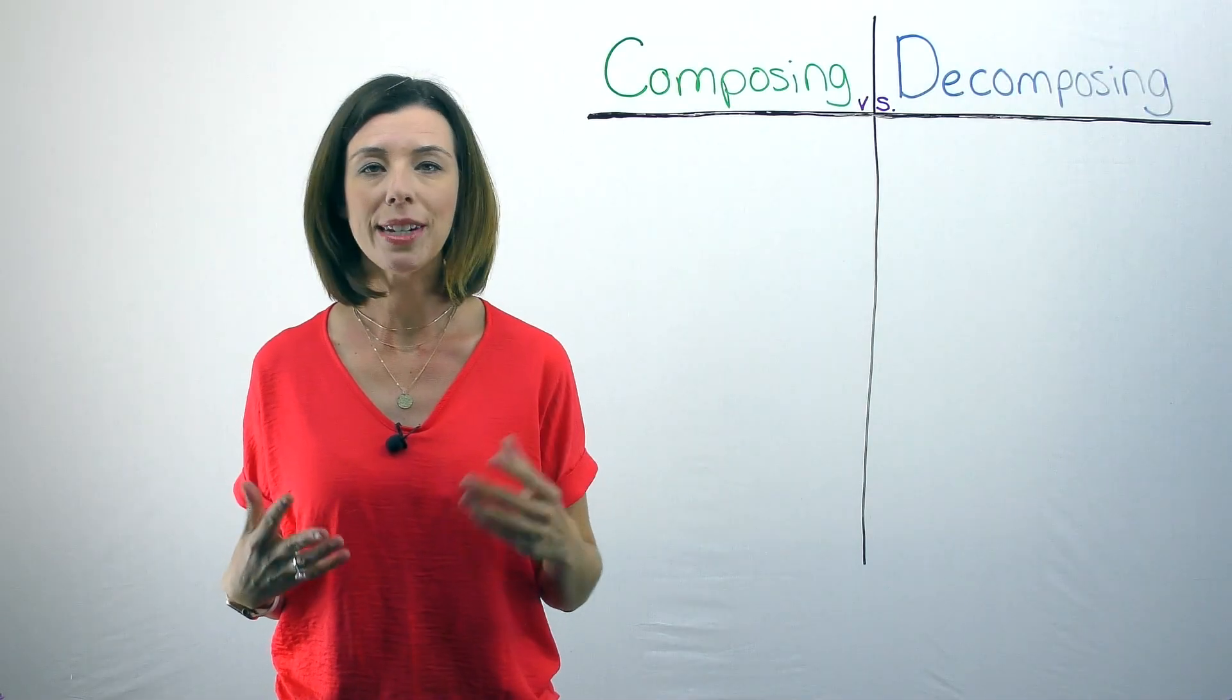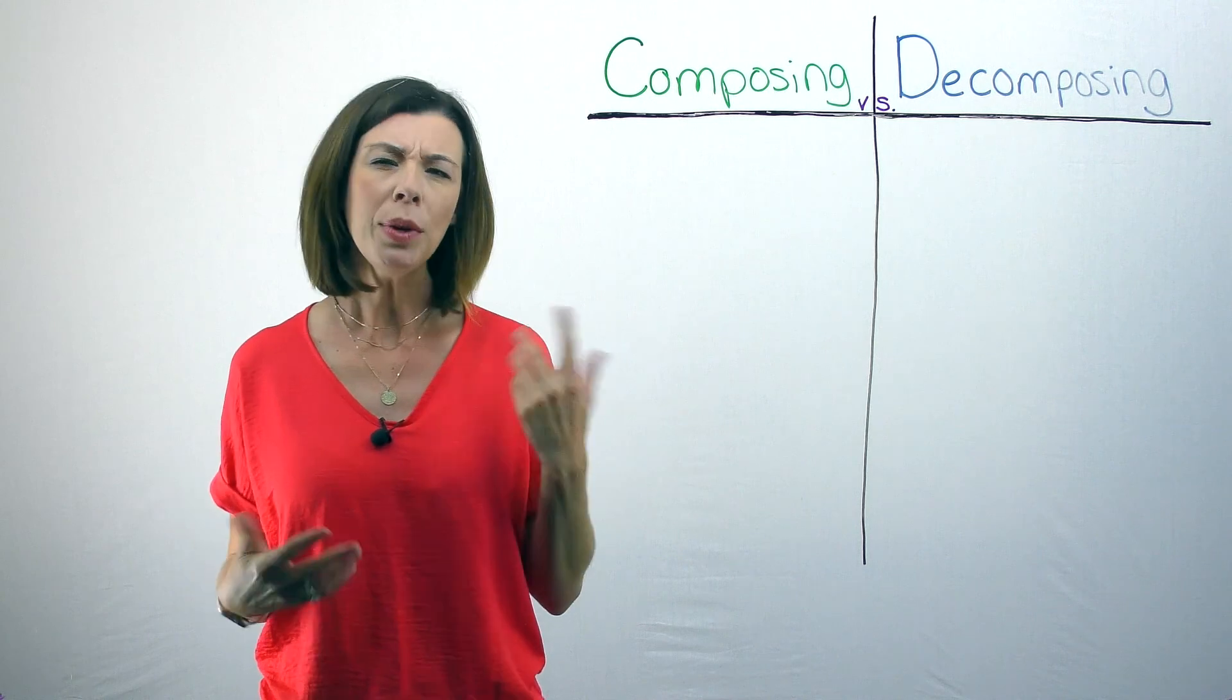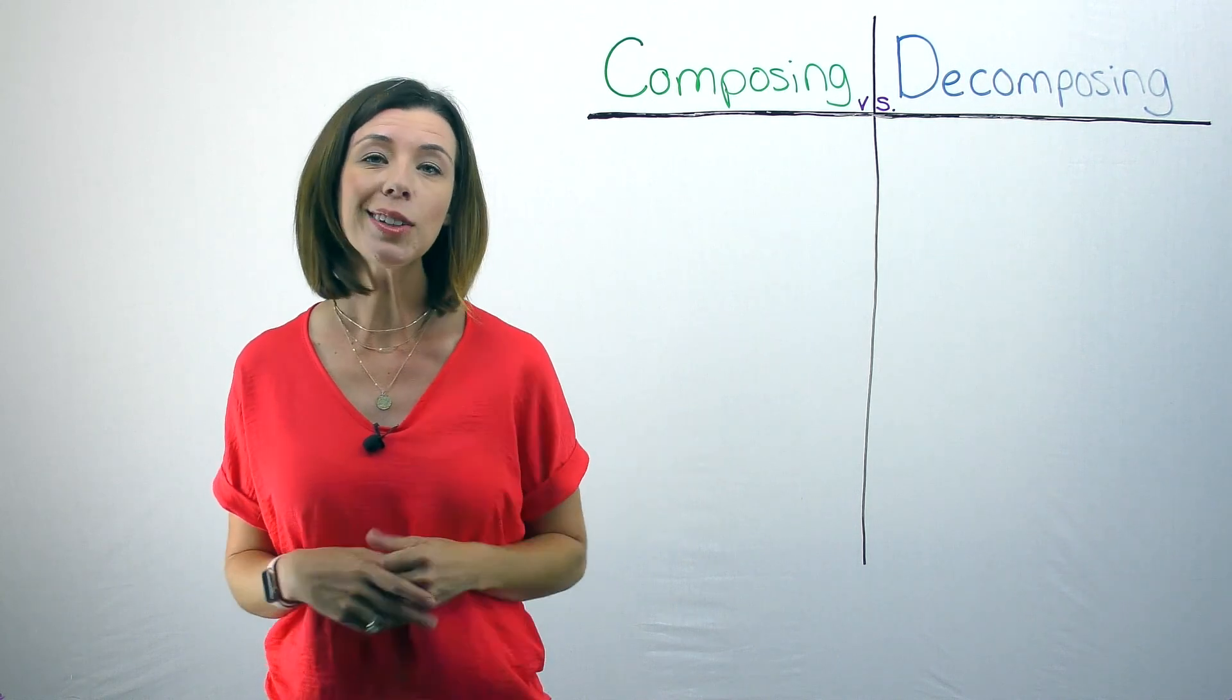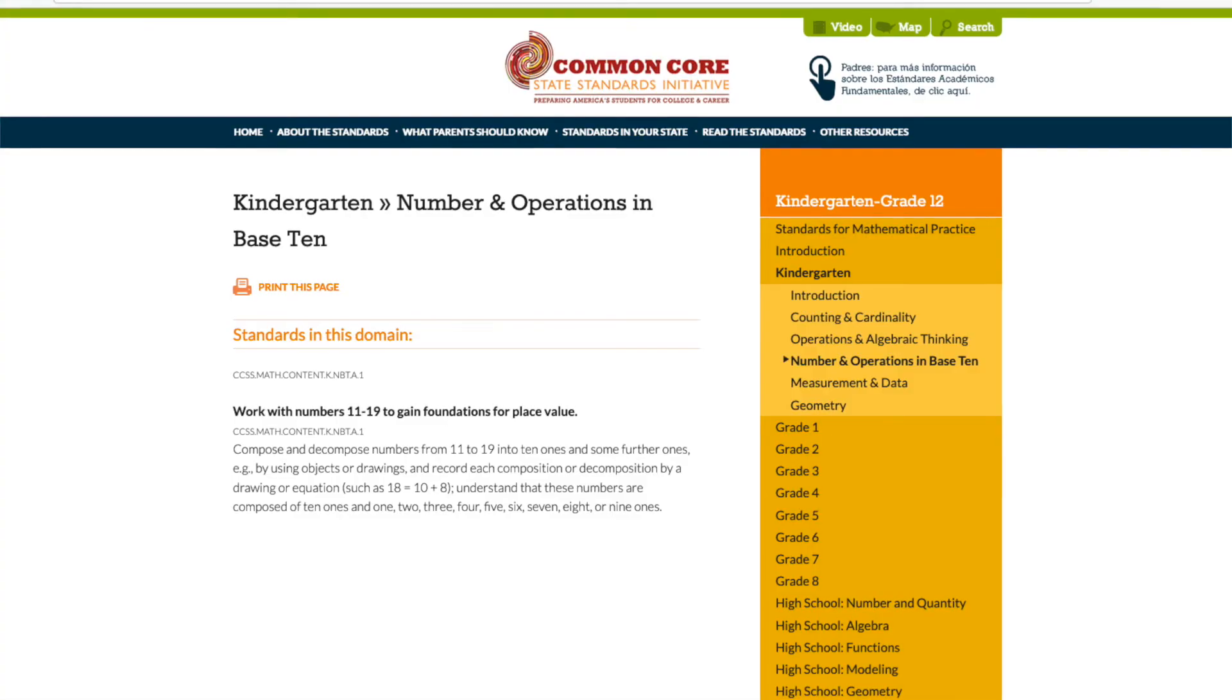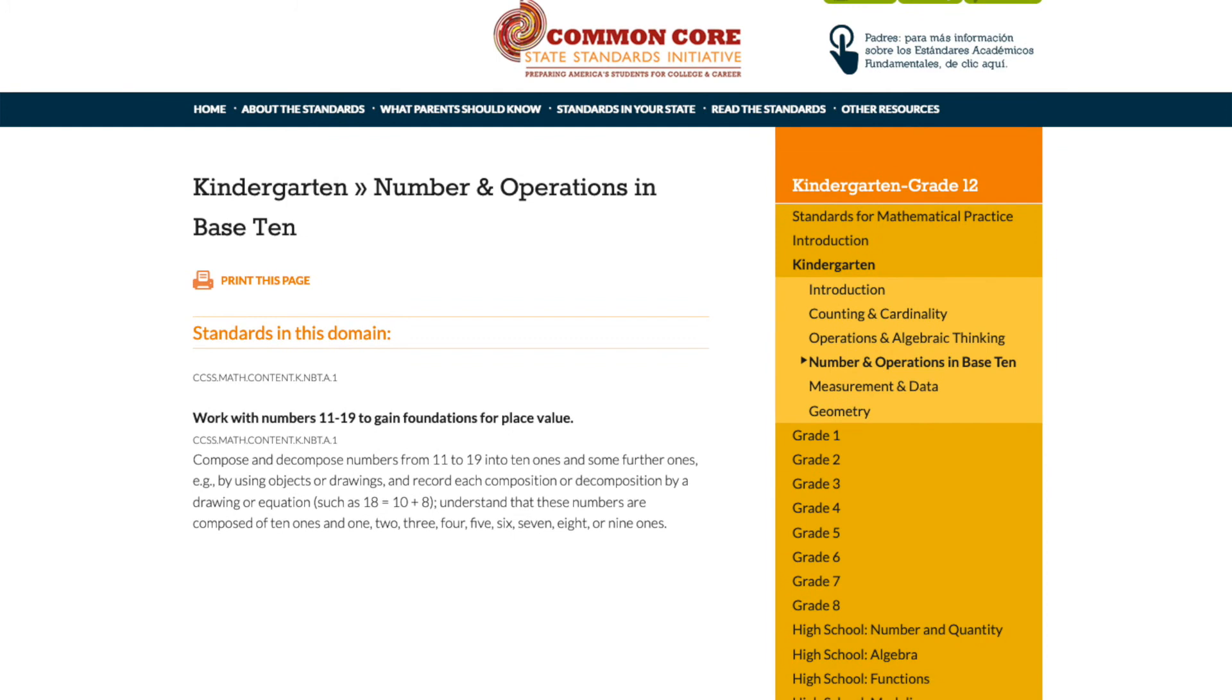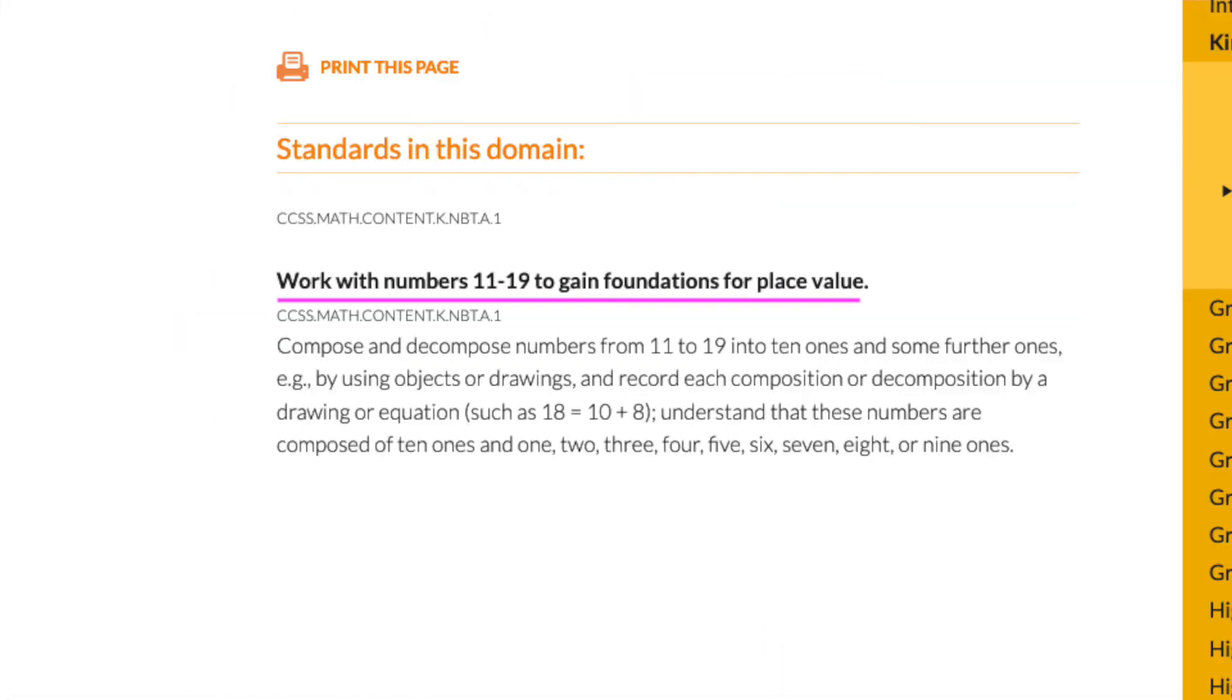Now that you have a better understanding of how we first teach children to count to ten, we need to talk about how do we go further from ten. Let's take a look at the Common Core State Standards again. These are coming from kindergarten, number and operations in base ten, and you will see that I've got up here work with numbers 11 to 19 to gain foundation for place value.